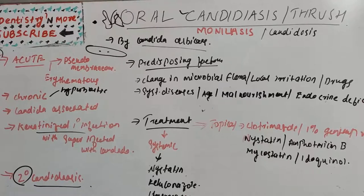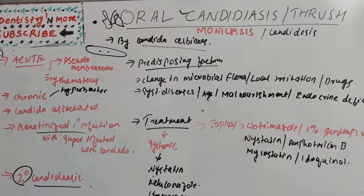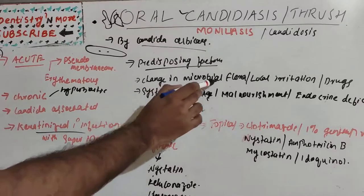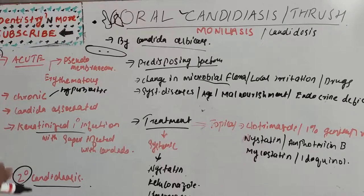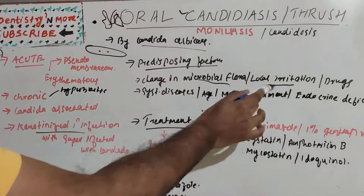The major predisposing factor is change in oral microbial flora, particularly from administration of broad-spectrum antibiotics. Xerostomia, secondary to anticholinergic agents and salivary gland disease, can also change the microbial flora of the oral cavity. Another predisposing factor is local irritation due to orthodontic appliances and various types of dentures, as well as heavy smoking.